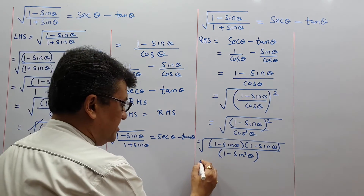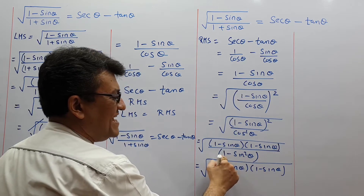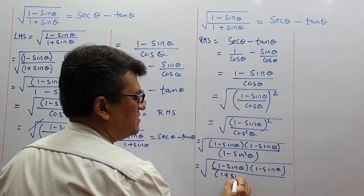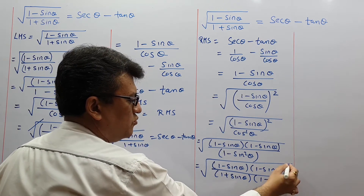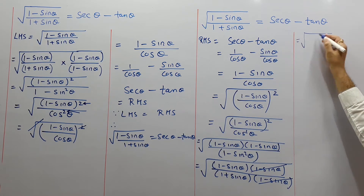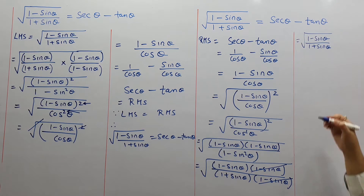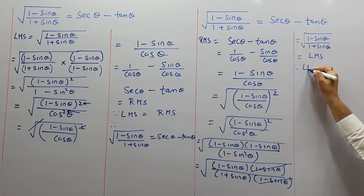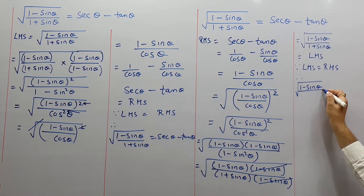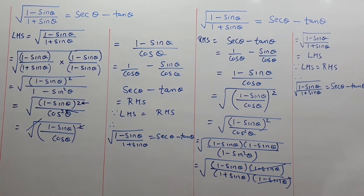We are left with √((1 - sinθ)/(1 + sinθ)), which is exactly our LHS. Since LHS = RHS, we write: √((1 - sinθ)/(1 + sinθ)) = secθ - tanθ. This completes Method 2.